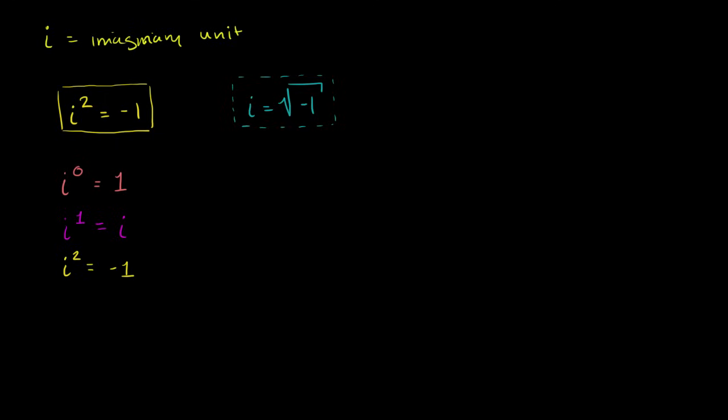Let's try i to the third power. i to the third power. Well, that's going to be i to the second power times i. And we know that i to the second power is negative 1. So it's negative 1 times i. Let me make it clear. This is the same thing as this, which is the same thing as that. i squared is negative 1. So when you multiply it out, negative 1 times i, we'll write as negative i.